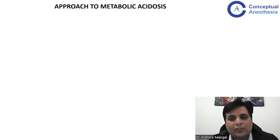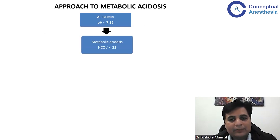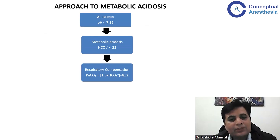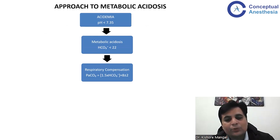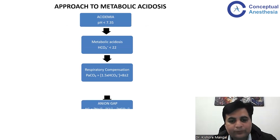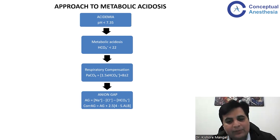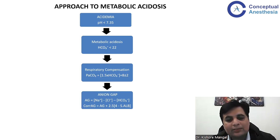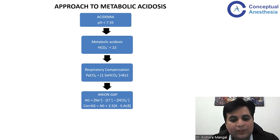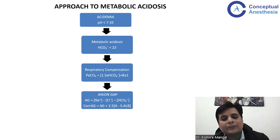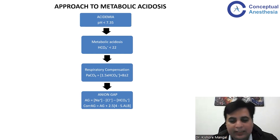When a patient comes to you with metabolic acidosis, you have to first confirm it by having a pH of less than 7.35, which confirms the acidemia. Then if bicarbonate is less than 22, it is metabolic in nature. Then you have to check for compensation — the compensation formula is PCO2. The expected PCO2 is 1.5 × bicarbonate levels + 8 ± 2. Then you calculate the anion gap: anion gap = sodium − chloride − bicarbonate. If the patient has hypoalbuminemia, the corrected anion gap = anion gap + 2.5 × (4 − albumin levels). If you do not have albumin levels, you take the anion gap as is.